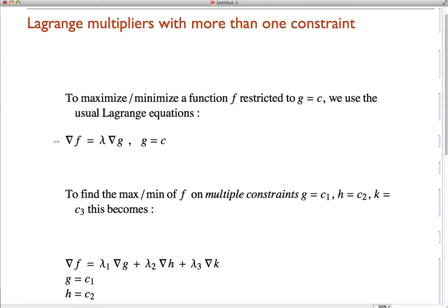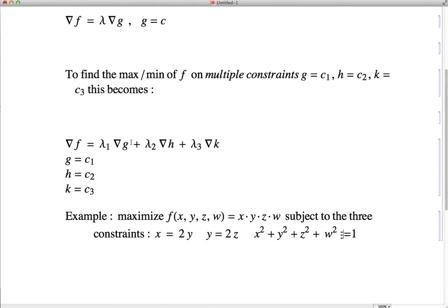So exactly the same story if you have multiple constraints. In this case, let's say we want to maximize or minimize f on g equals some constant c1, h equals some constant c2, and k equals some constant c3.